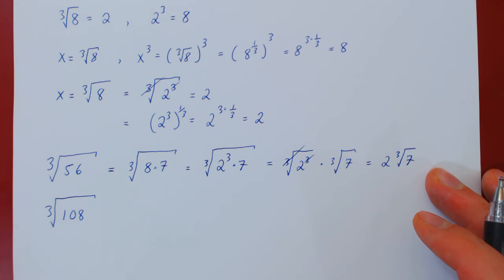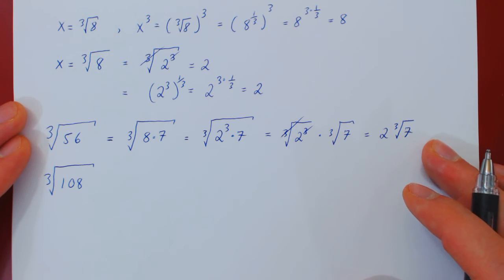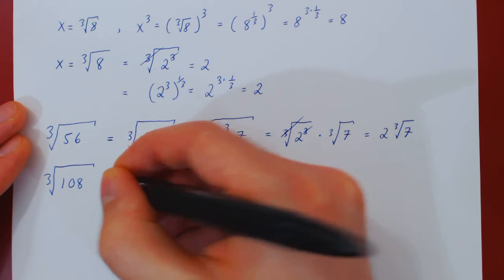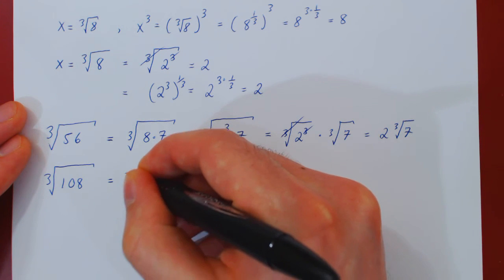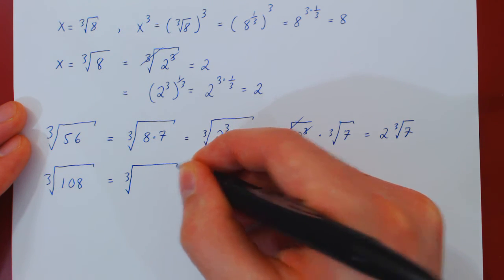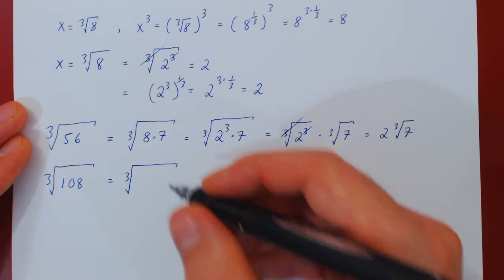Well, one obvious factor of 108 is 2, as 108 is even. So if we factor 2 from here, 108 is 2 times 54.